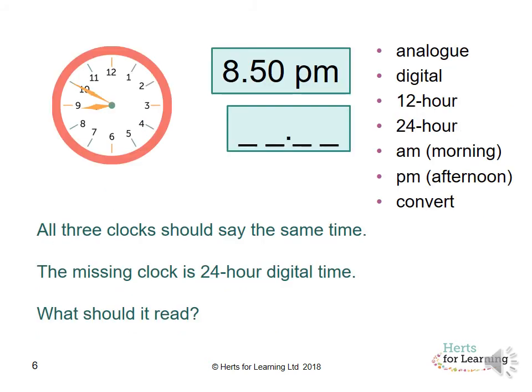Looking at all three clocks, they should say the same time. The missing clock is the 24 hour digital time. What should it read? Have a think. Pause the video. It should be 20:50. You don't have to write PM because 20 will indicate it is in the 24 hour clock. The analog clock is showing 10 to 9. When you're ready, go on to the next slide.